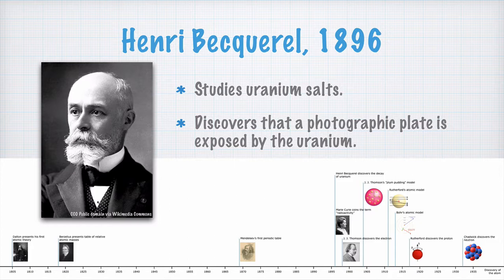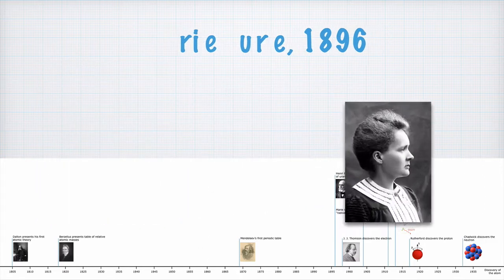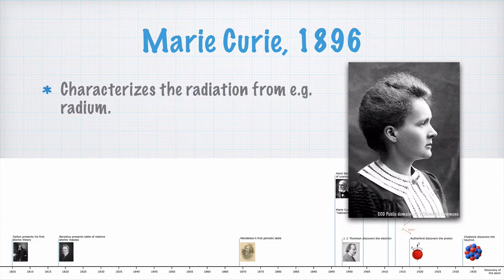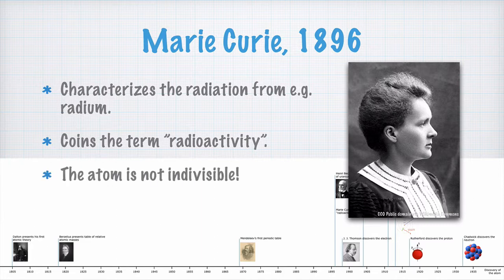Becquerel understood that the uranium salt must have emitted some kind of rays. Could it be X-rays? No, Becquerel could show that it was some other kind of radiation. The radiation from the uranium salts appear when the uranium decays and turns into other elements. This was something that Marie Curie discovered when she studied the radiation from radium, among other elements. She actually coined the term radioactivity. And for her work on radioactivity, she was awarded with the 1903 Nobel Prize in Physics together with her husband Pierre and with Henri Becquerel. The conclusion that I want you to understand right here is that they discovered that the atom was in no way indivisible. It must consist of other smaller parts.